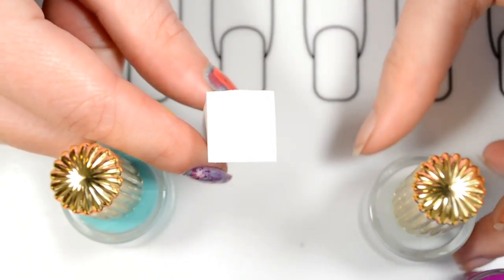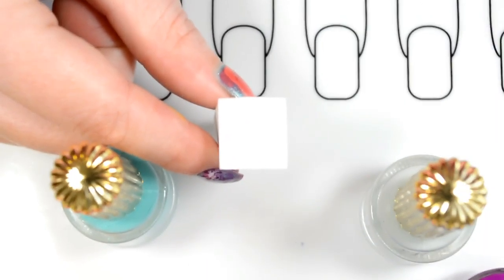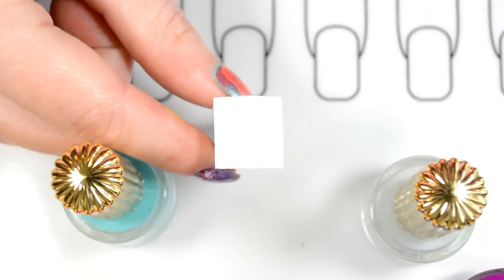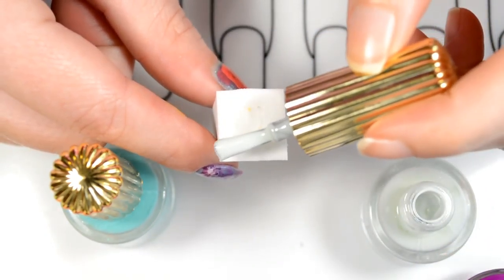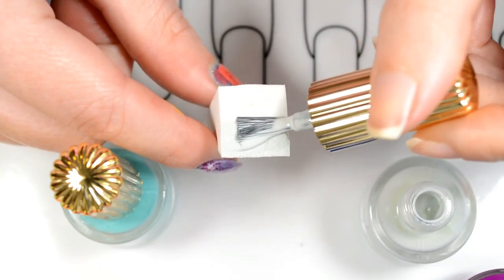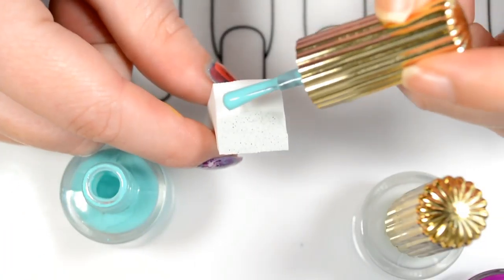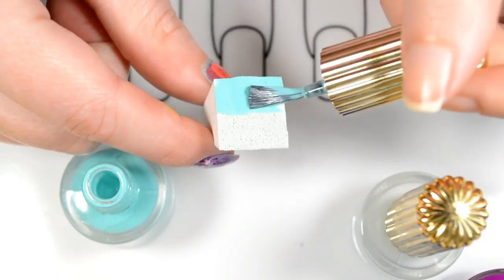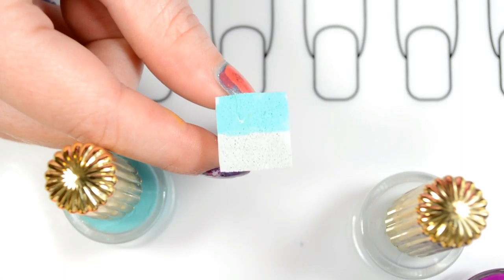So as I said earlier, the only difference between an ombre and a gradient is the terminology. An ombre is going to be two colors within the same color family blended together or faded together. So today we're going to be using green, and it is the same exact process.